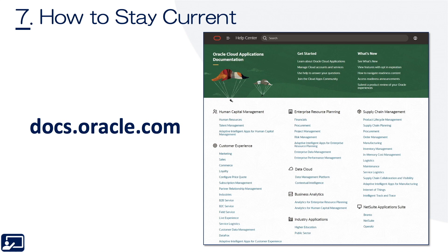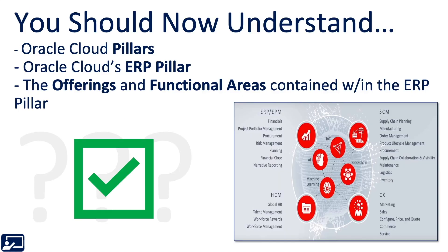Seventh topic: how to stay current. We talked a couple slides ago about seeing current applications and functional areas. Another great way to stay current and research application information is to use docs.oracle.com — that should always be current. You should now understand what Oracle Cloud pillars are, what the ERP pillar is, and the offerings and functional areas contained within the ERP pillar. If you don't, watch the video again — it's free.